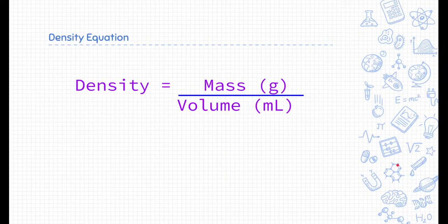This is the density equation. This is how we calculate and put a number to density. Density is equal to the mass of a substance measured in grams divided by the volume measured in milliliters or centimeters cubed.